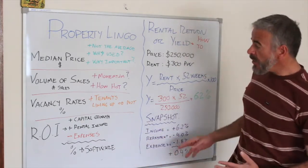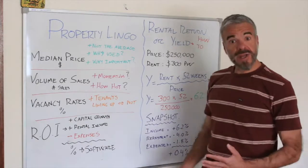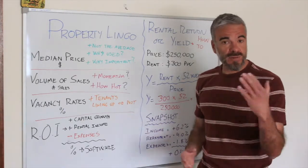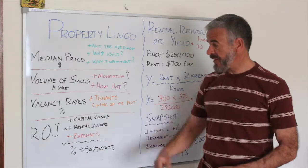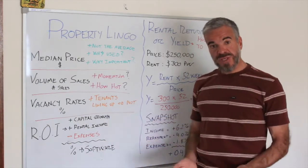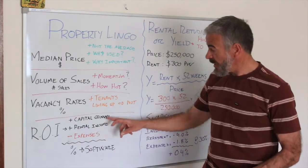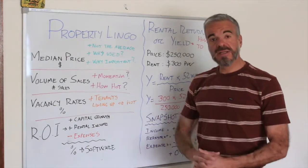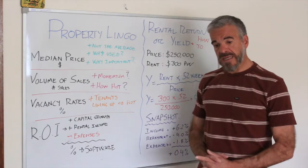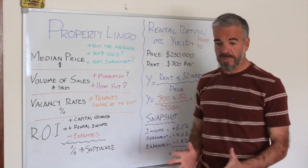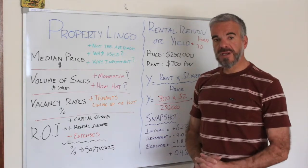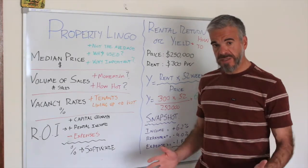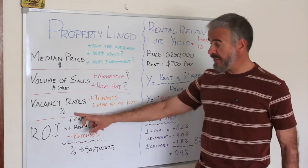The other term you want to be across is vacancy rate. It's expressed as a percentage, and an agent will give it to you — there's also a lot of free information online. If it's below, say, one percent, it means tenants are literally lining up to live in that area, which is pretty good. I would never buy anything over two percent, because above two percent means the property could be vacant three or four weeks or more at any given time if a tenant decides to vacate — so that's like an insurance policy for me.